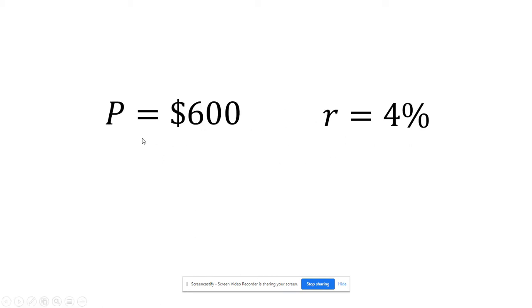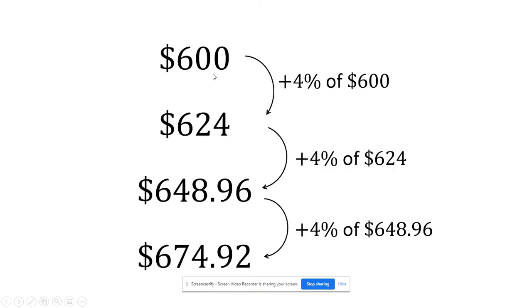So let's do this example with a principal of $600 and an interest rate of 4% for our annual interest. So the first step, we're going to take 4% of $600, which is $24. So we add that to the $600 and we get $624.